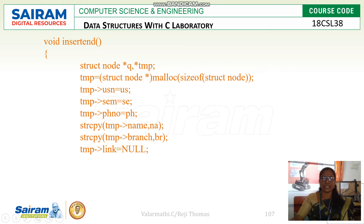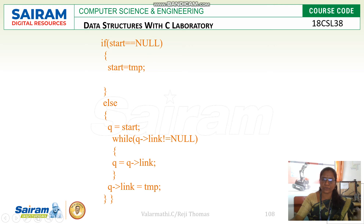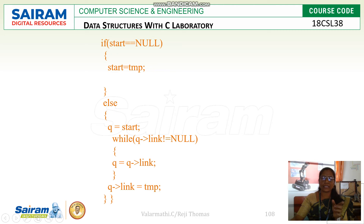For insert at the end, we follow the same first five procedures, then make temp->link null. If start equals null, assign start equals temp. Otherwise, we traverse to the end of the list using the condition: while Q->link is not equal to null, move to the next node. Once Q->link reaches null, that means we are at the last node, and we connect Q->link to the temporary node we created.